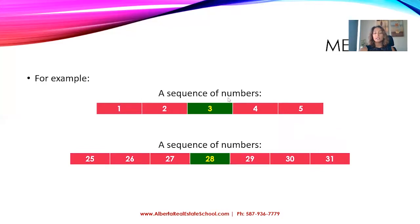For example, let's say we have a sequence of numbers one to five. In this case, number three is the number that appears in the middle, so that would be our median. Or if you have a sequence of numbers from 25 to 31, then 28 will be our midpoint or the median number in this set of data values.